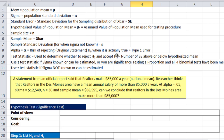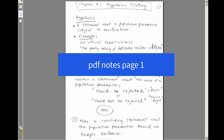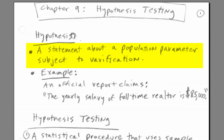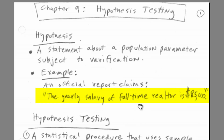Chapter 9 — we're going to do hypothesis testing, bringing together everything we've done so far. What is a hypothesis? A statement about a population parameter that is subject to verification. For example, an official report claims the yearly salary for full-time realtors is $85,000. If you're someone looking at this and say that doesn't make sense for our region, you could go out and do a test to see if this statement is reasonable for your particular region.